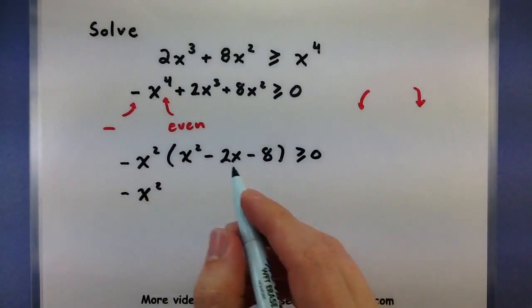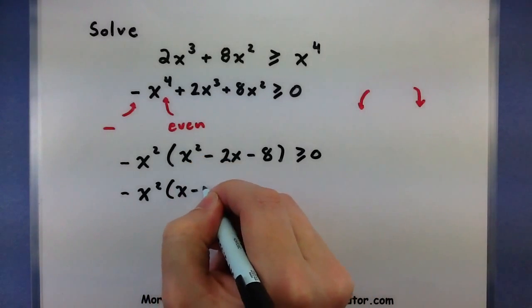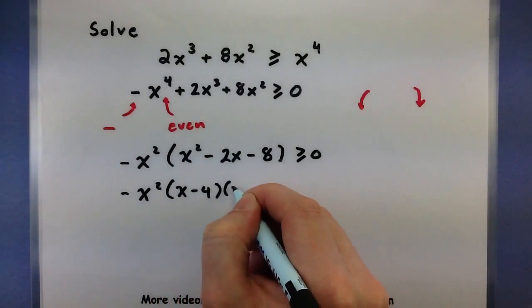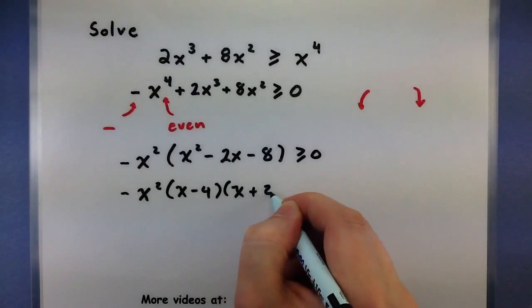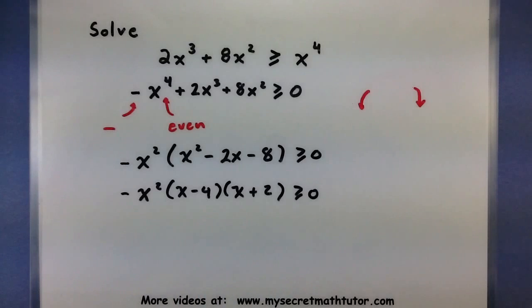And factor out a little bit more. x minus 4, x minus 4, and x plus 2. So now from each of these factors I can figure out where it crosses the x-axis. Alright, let's jump to that step.